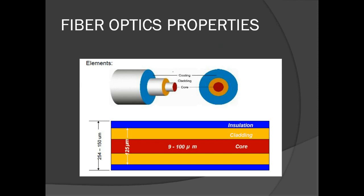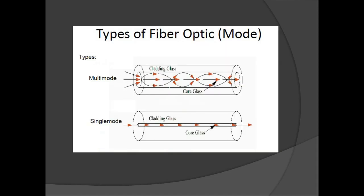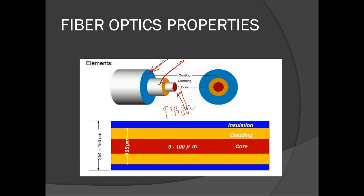These are the fiber optic properties. We have the coating on the outside, the cladding underneath, and the fiber core at the center. The cladding prevents light from passing outside the cable — its purpose is to keep the light confined within the core.